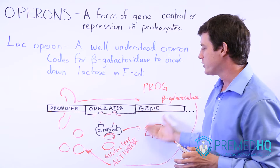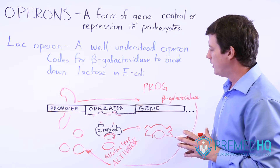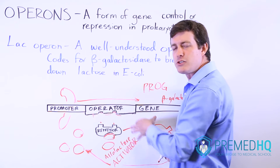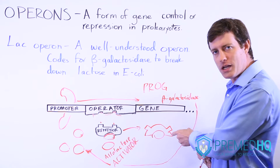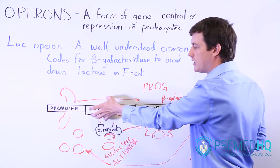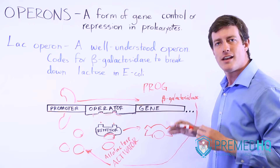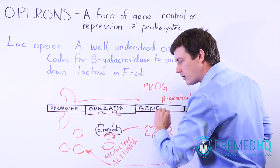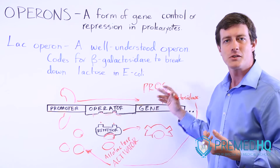The PROG as well as possibly the activator can be considered your operon — a great form of gene control. When you don't have the allolactose, the repressor represses transcription and you produce none of this enzyme. When you do have the lactose available, it causes the repressor to change shape, stopping its repressive function. The polymerase then slides through the operator, transcribing the gene to produce beta-galactosidase and degrade all of that allolactose.